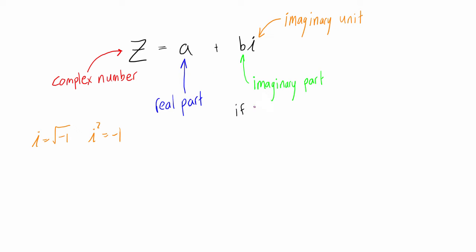If b equals 0, then the complex number z is just going to equal a, so the complex number will just be a real number. And if a equals 0, then z equals bi, so it won't have a real part, and we call that a pure imaginary number.